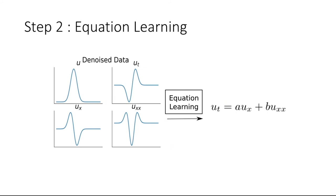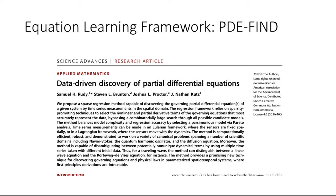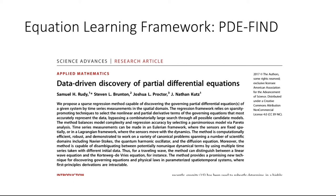That is our conclusion for the first part of our equation learning framework: we use this artificial neural network to go from very noisy data to clean versions and their derivatives over both time and space. Now we use these clean estimates in an equation learning framework to figure out the mathematical model that best describes the data. This methodology was developed in 2017 out of Nathan Kutz's lab at the University of Washington. The idea is that these mathematical models take the form where cell density changes over time given some candidate terms on the right-hand side.